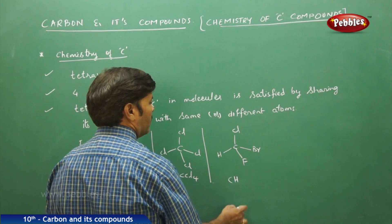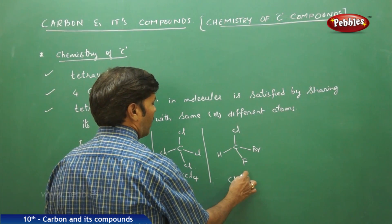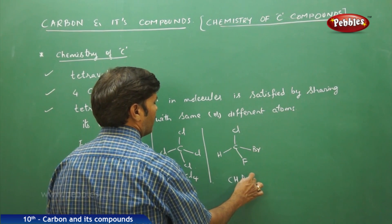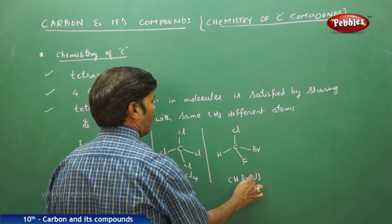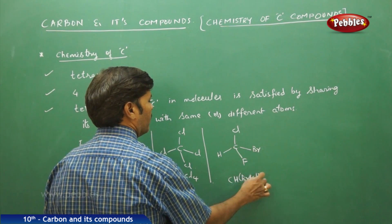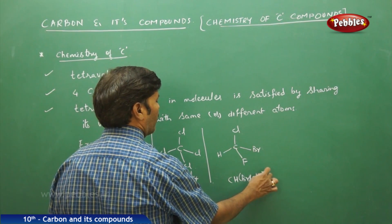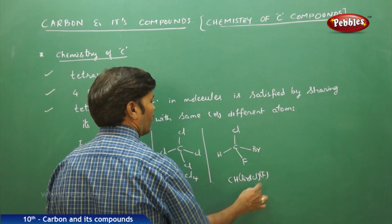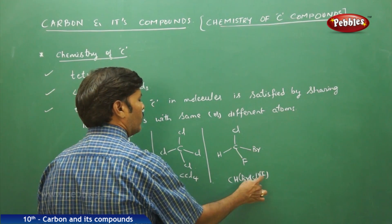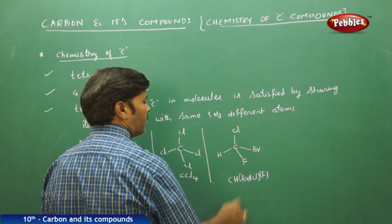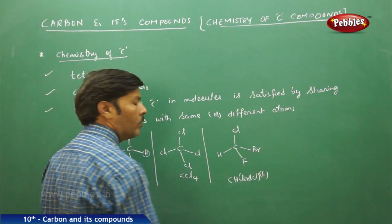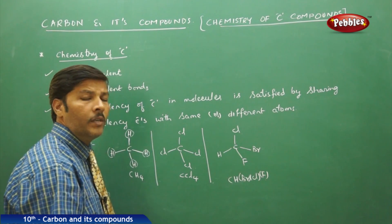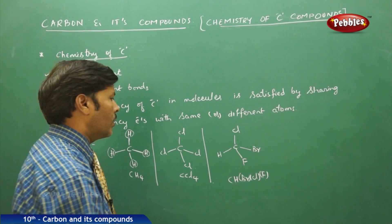For example, CHBrClF — that is, bromochlorofluoromethane. This is bromochlorofluoromethane, and so on.